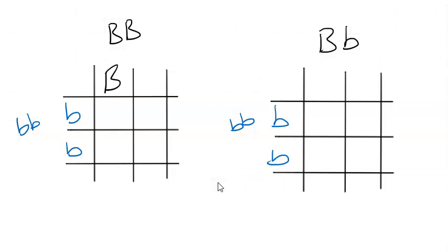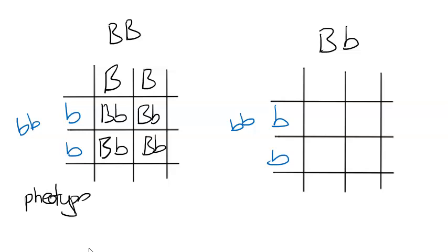So let's fill these out. So the potential offspring, the genotypes of the offspring that this first Punnett square could have would all be capital B, lowercase b. I'm just going to do this all in black pen. Capital B, lowercase b, capital B, lowercase b. So our phenotype ratio is that every single offspring is going to contain a dominant allele, which means that they're all going to be 100% brown eyes.